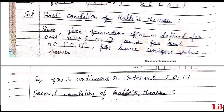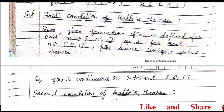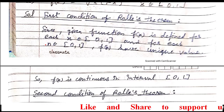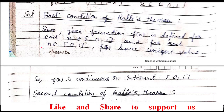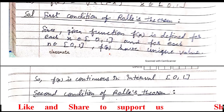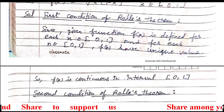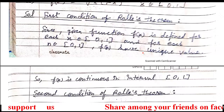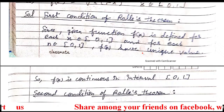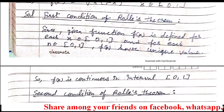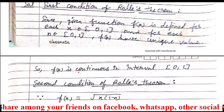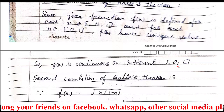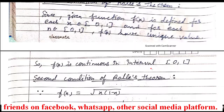Since the given function f(x) is defined for each x belonging to [0,1], and for each x in [0,1] f(x) has a unique solution, we conclude that f(x) is continuous in the closed interval [0,1]. So the first condition is satisfied. Now we will move to the second condition.